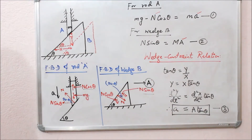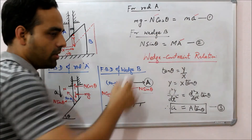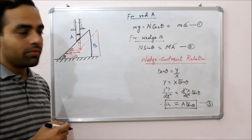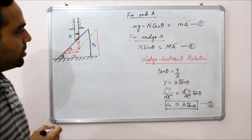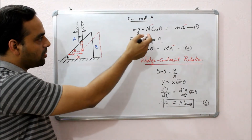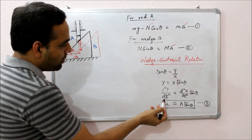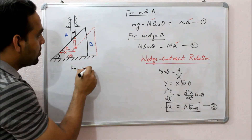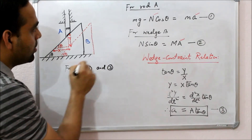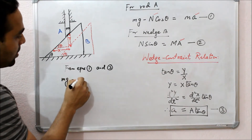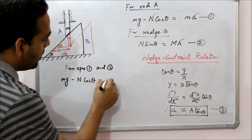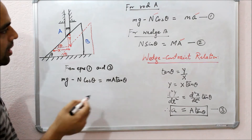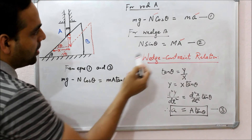Now we have three unknowns and three equations so we can easily find out the acceleration of the wedge. We can put the value of small 'a' from equation number 3 into equation number 1. From equations 1 and 3: Mg minus N cosθ equals M·A·tanθ. Now we can take the help of equation number 2 and replace the normal reaction force N by M·A upon sinθ.